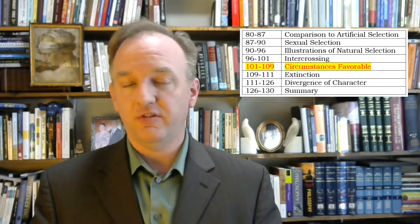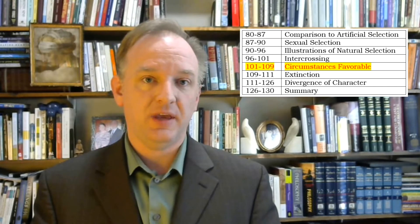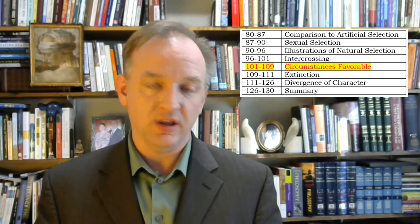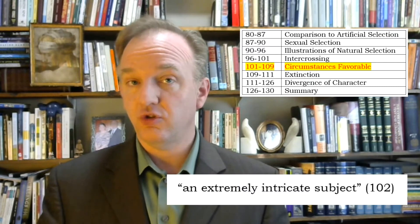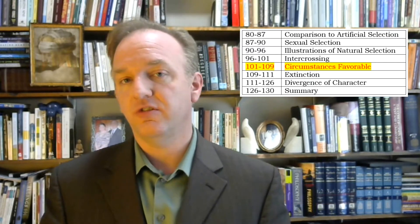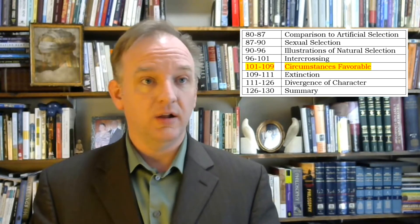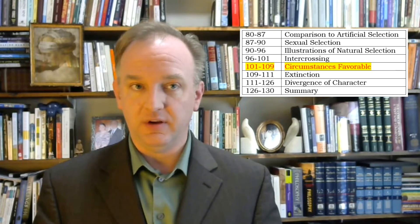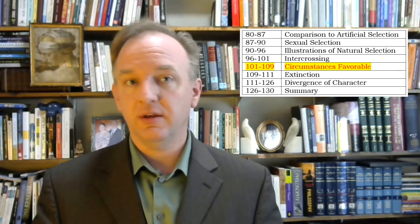The fifth section is seven and a half pages on circumstances favorable to natural selection, which Darwin calls an extremely intricate subject. He discusses the effects of various factors on natural selection, including a large number of heritable variations, intercrossing, physical isolation, and largeness of area in which the species dwells.